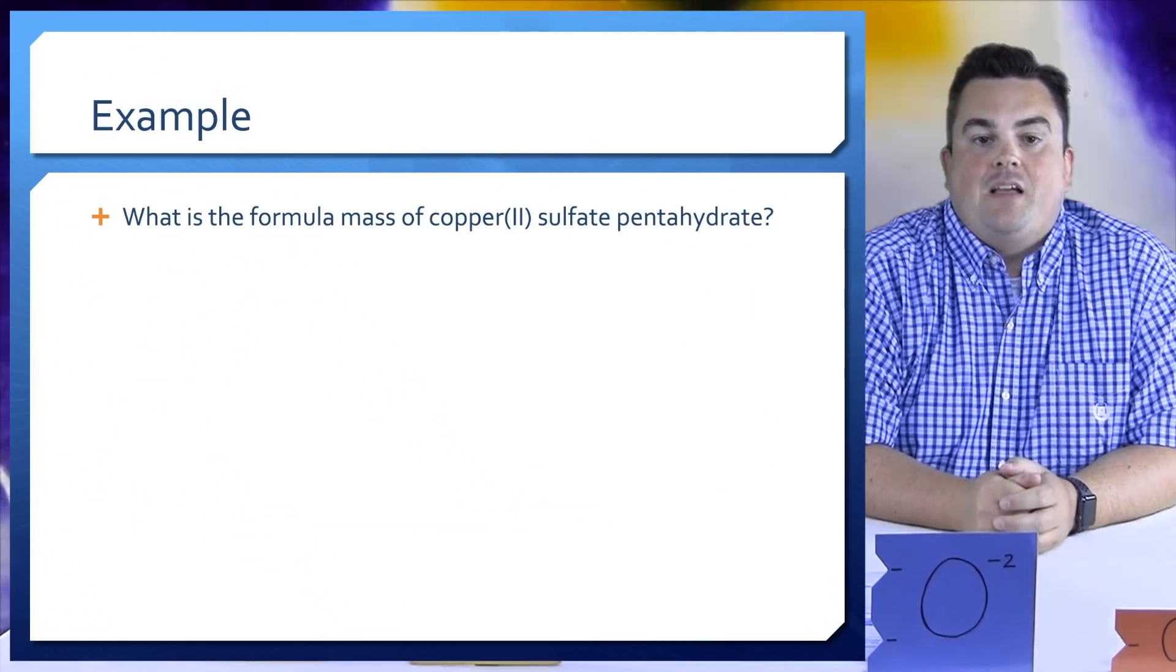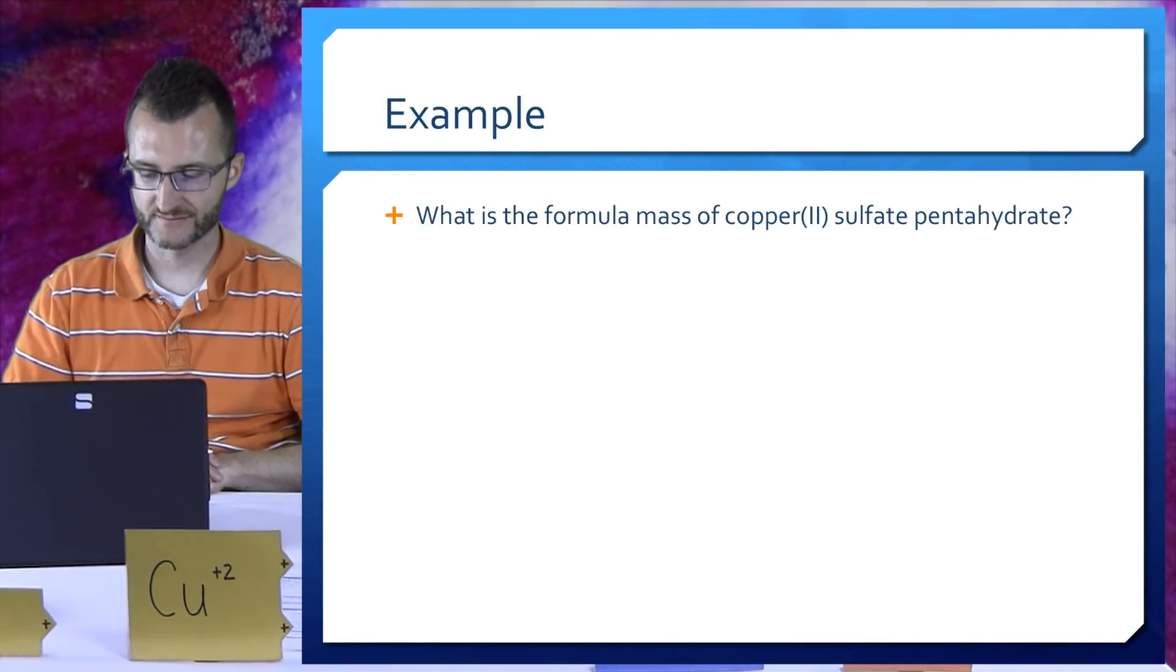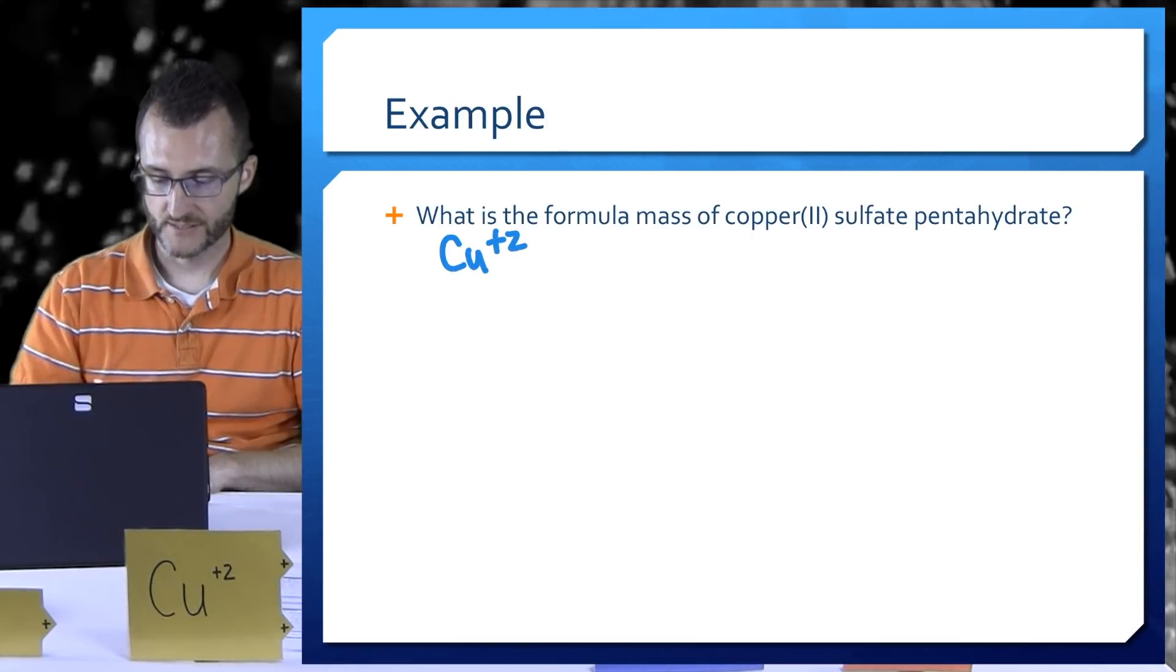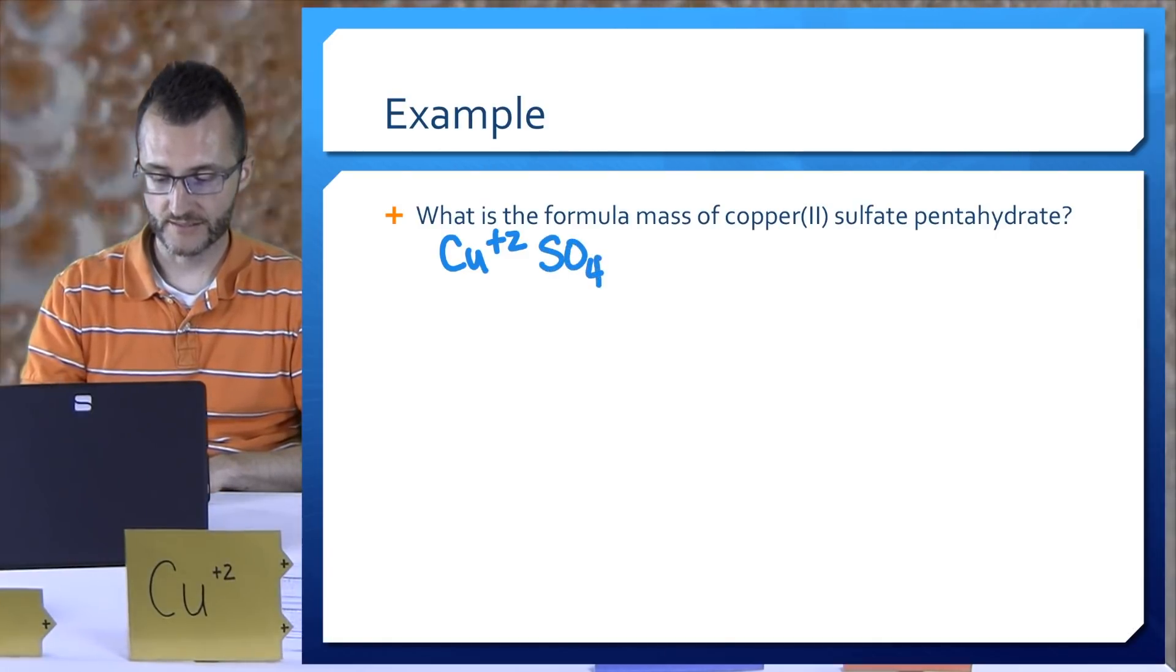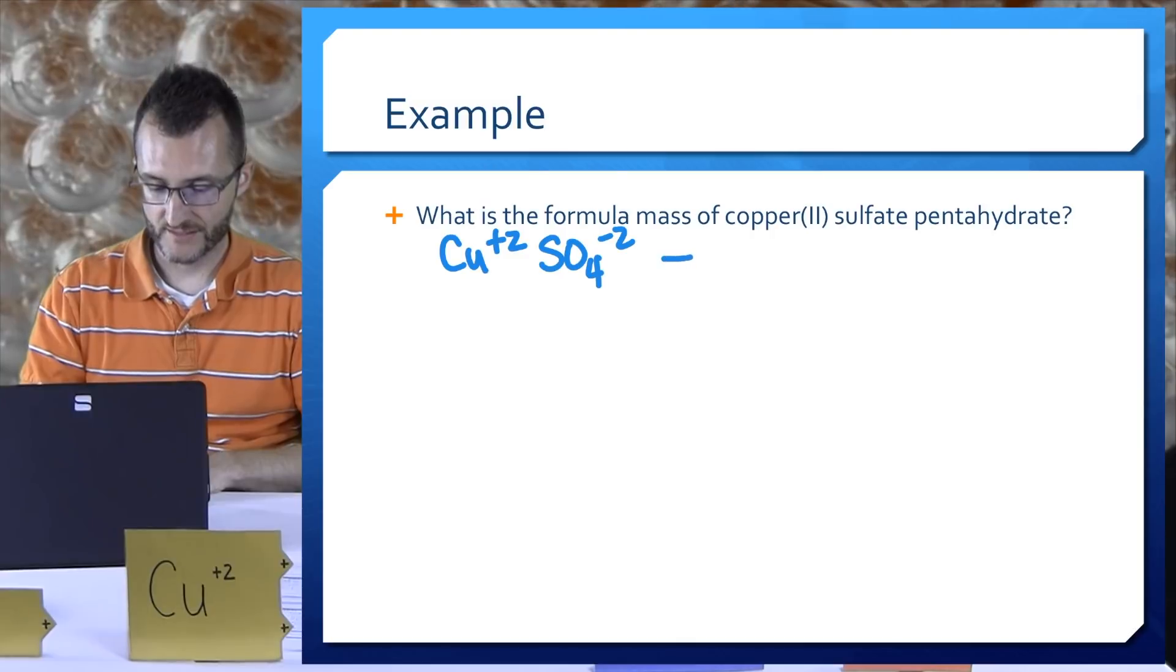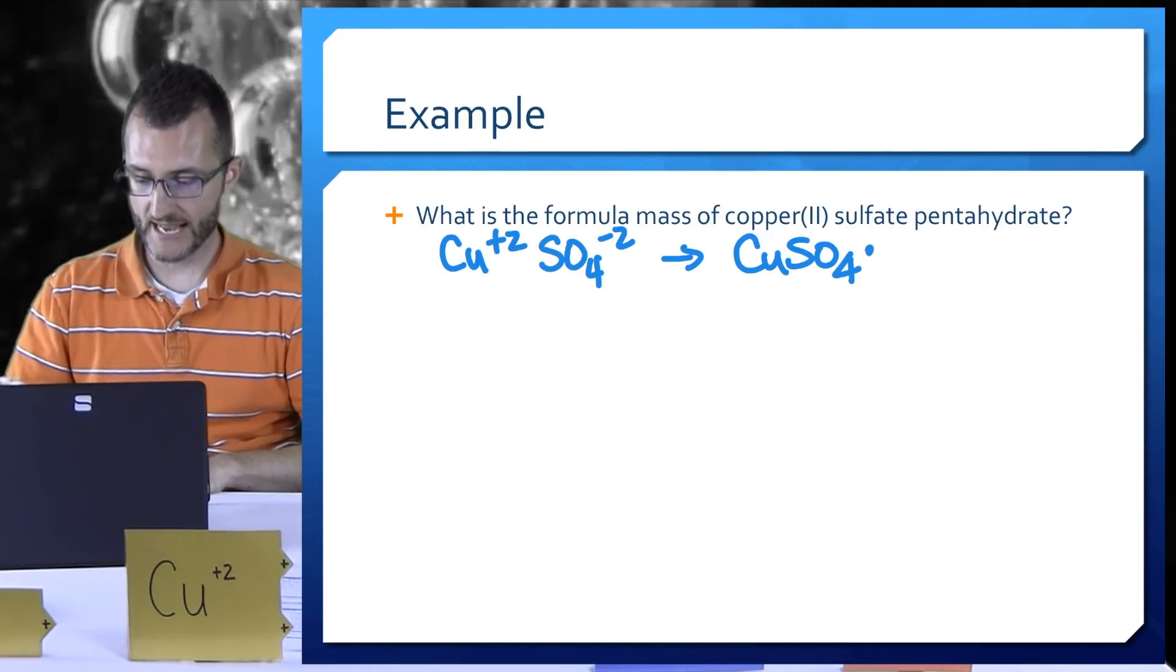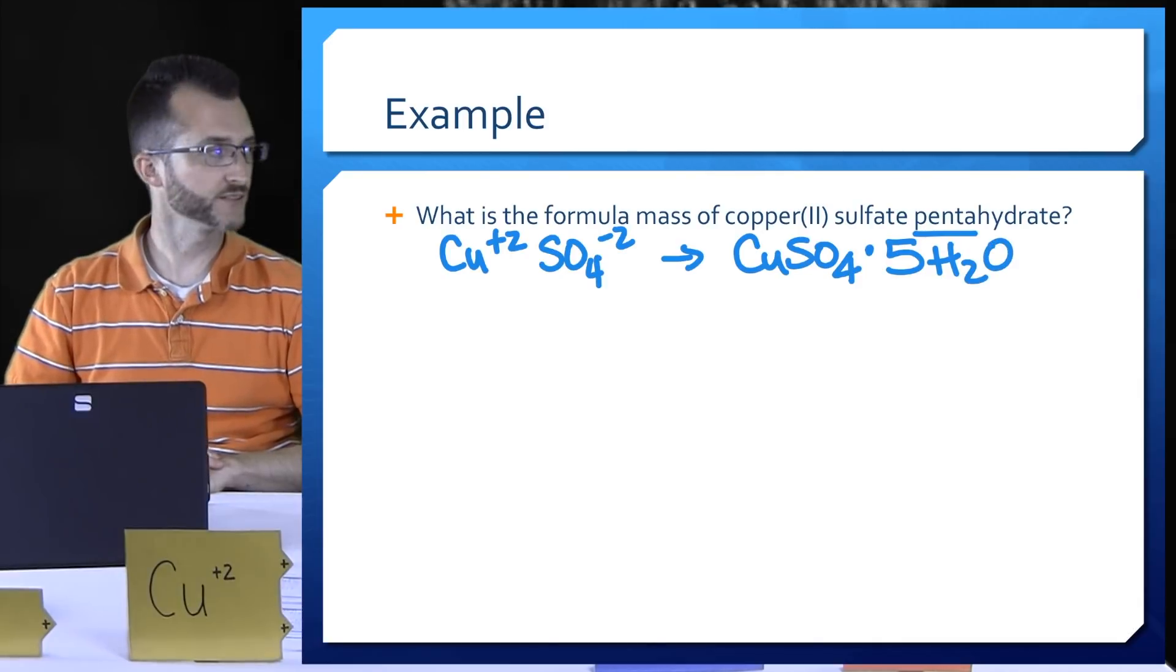We're going to do an example of the formula mass of a hydrate. What is the formula mass of copper(II) sulfate pentahydrate? So let's get that formula. Copper two means copper has to be plus two. Sulfate ending in A-T-E means it's a polyatomic. I can look on table E, I see that it's SO4 minus two. So let's just put those together. I get CuSO4. And then it says pentahydrate, so that means there's water in there. So I use a little dot to show the water is attached to the ionic structure. And penta means five, so I should just have five water molecules.